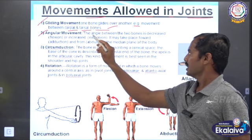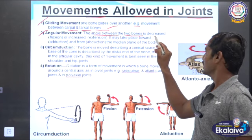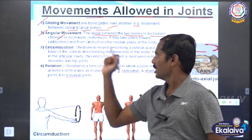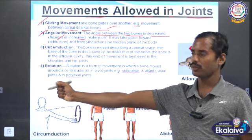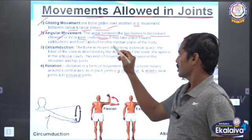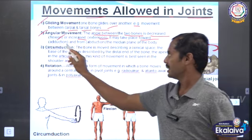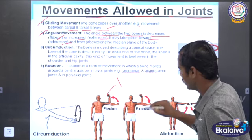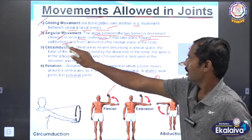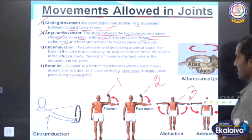Number two: angular movement. When the angle between two bones decreases, that is flexion. When it increases, that is extension. Extension is backward and flexion is forward. Number three: abduction — moving away from the median plane. Number four: adduction — moving toward the median plane of the body.